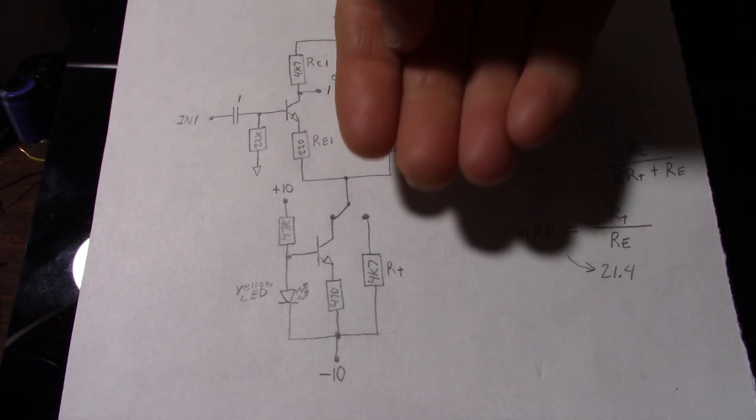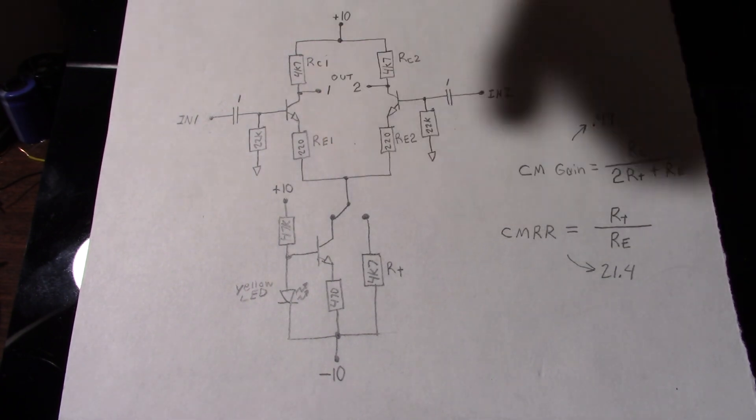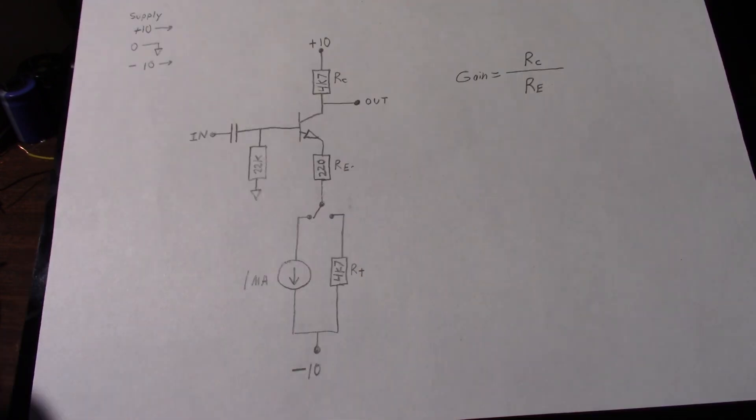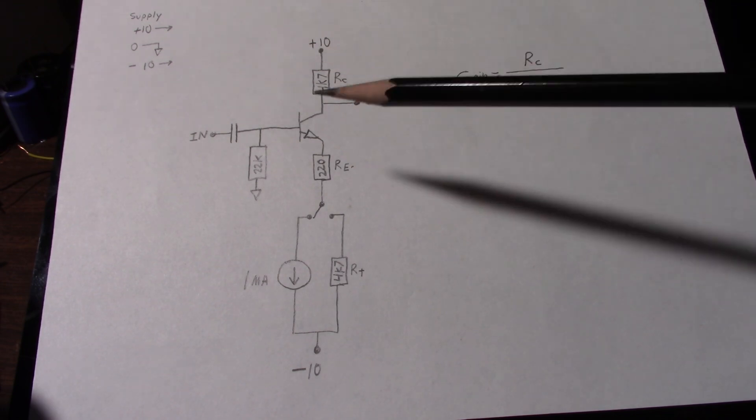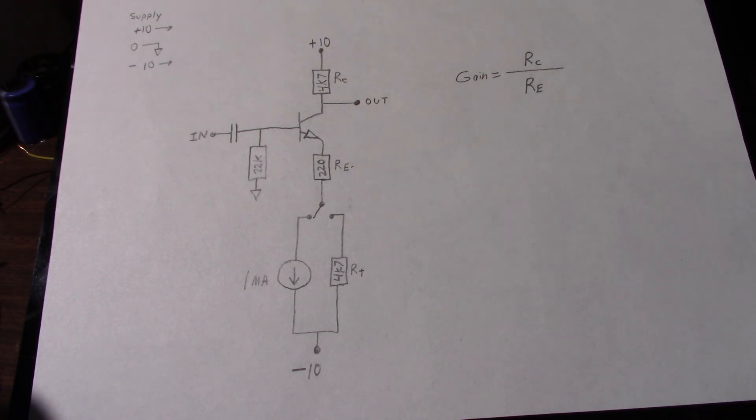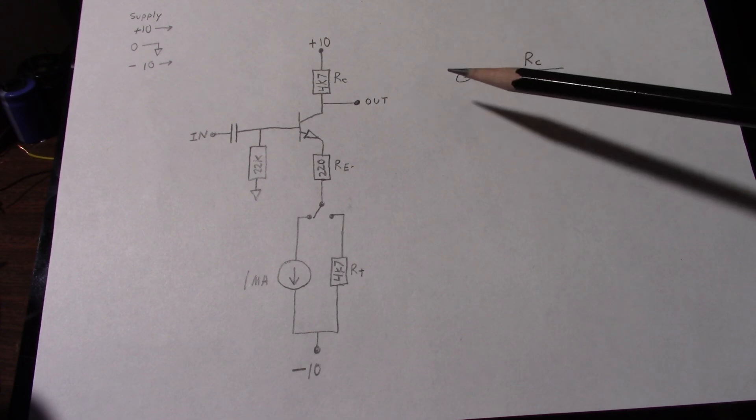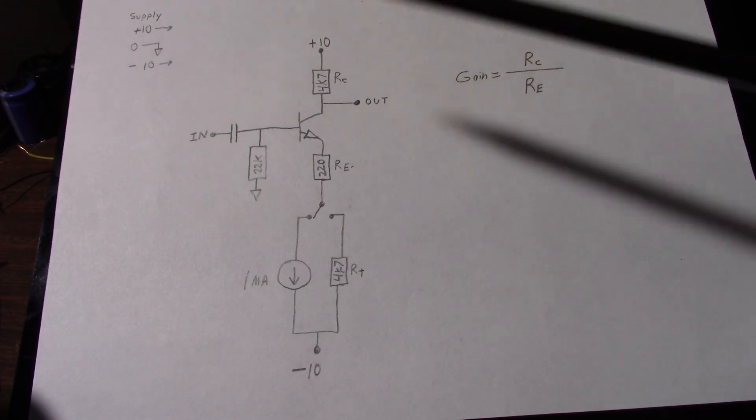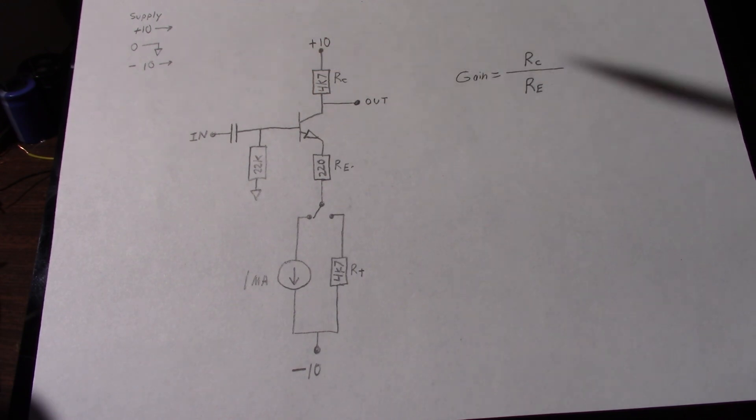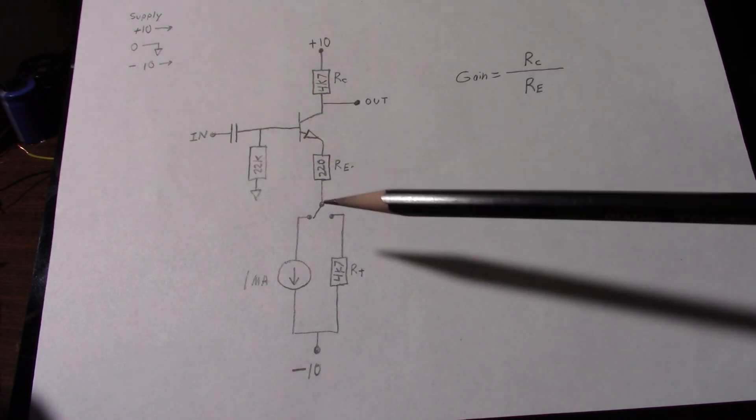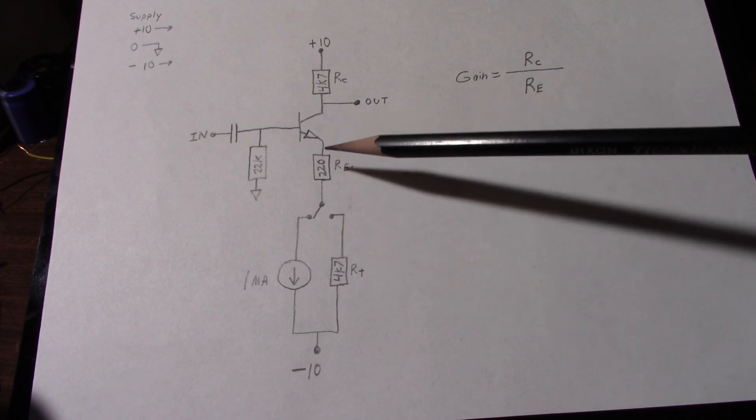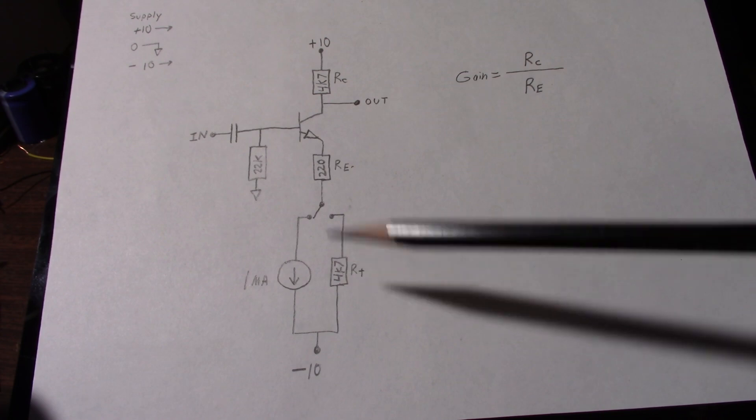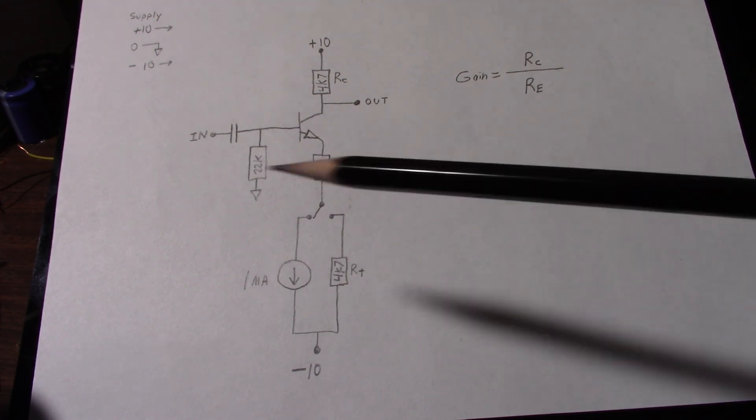So it's the collector resistance divided by two times the tail resistor value plus the emitter resistor here for using one. So when I take away one side of the circuit, this now becomes the gain equation. So here's the simplified circuit took away the other side of the amplifier. So the gain of the circuit, it's not common mode anymore, it's not a differential amplifier now. So it's RC over RE. And in the case when we have the resistor switched in, it's RE plus RT. And we'll see that momentarily.